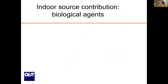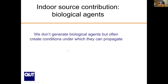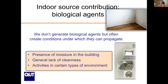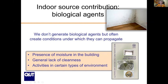Regarding biological agents — we don't generate them the way we generate combustion particles, but we often create conditions under which they propagate. The key example is mold, as highlighted in the WHO guideline document on dampness and mould. The presence of moisture in buildings, general lack of cleanliness, and specific activities in certain environments lead to mold on walls.